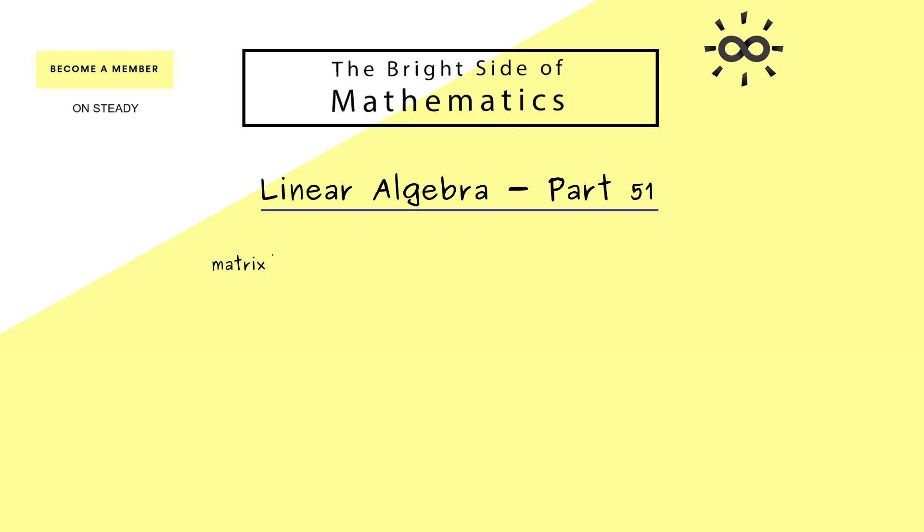Okay, then let's immediately start by recalling what we already know about the connection of matrices and linear maps. So for example, if you have a matrix A, you can always define a linear map. This connection works for all matrices, however here we will only consider square matrices. Now, this linear map is called f_A and it's defined by sending the vector x to the vector Ax. So we just have the common matrix vector multiplication.